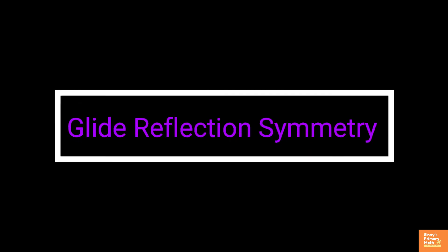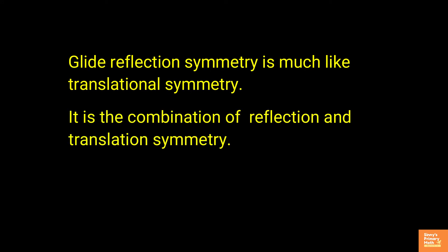Glide reflection symmetry. Glide reflection symmetry is much like translational symmetry. It is the combination of reflection and translation symmetry. It involves both processes. Reflection over a line and then translation along the line, both combined into a single operation. If we change the combination's order, it will not alter the output of the glide reflection.